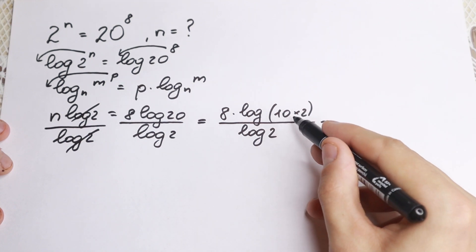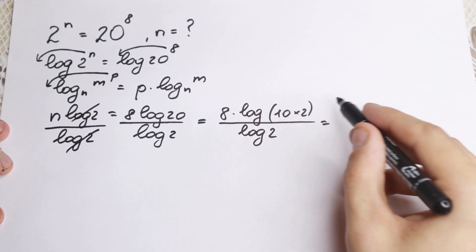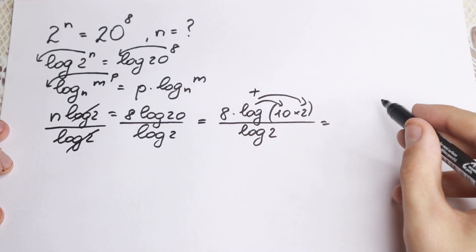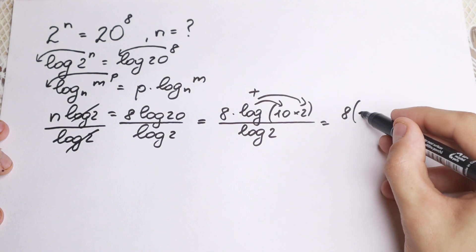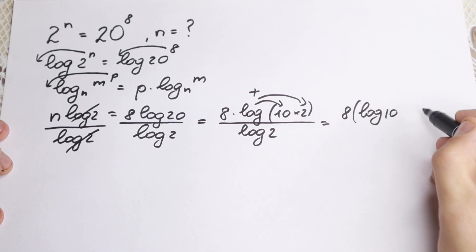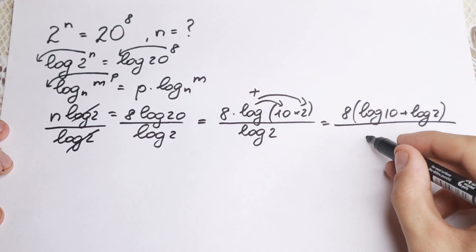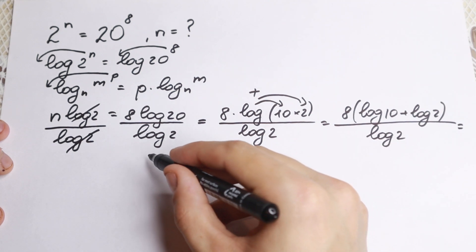If we have logarithm of a product, so we can easily write it as a sum of logarithms, so sum of this logarithm plus this one. Okay, we will have 8 times logarithm 10 plus logarithm 2, dividing by logarithm 2 equal to.